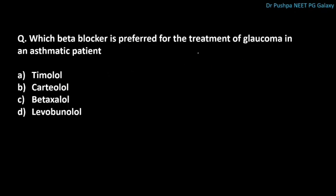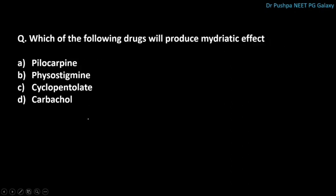Which beta-blocker is preferred for the treatment of glaucoma in an asthmatic patient? The correct answer is betaxolol, which has less bronchopulmonary and less cardiac side effects. Which drug will produce mydriatic effect? The correct answer is cyclopentolate. Parasympatholytics causing mydriasis include atropine, cyclopentolate, tropicamide, and homatropine.